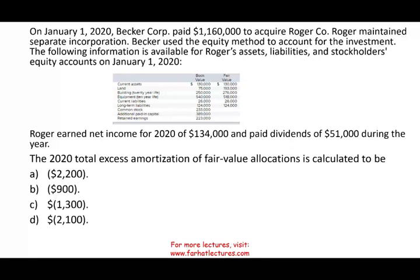When there are a lot of numbers, read the question first. The question asks for the 2020 total excess amortization of fair value allocation. Excess amortization occurs when one company buys another and pays more — perhaps because the target's assets are undervalued or they have an intangible asset not on the books. Once you buy the company, you will have what is called excess amortization.